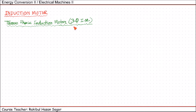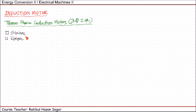Let us start with three-phase induction motor. As it's a motor, that means it will take electrical input and will give mechanical output. As the name says, it is three-phase, which means three-phase electrical supply is needed to operate this induction motor. A three-phase induction motor has two main parts: one is a stationary stator and a revolving rotor. This rotor is separated from the stator by a small air gap, and this air gap ranges from 0.4 millimeter to 4 millimeter, depending on the power of the motor.